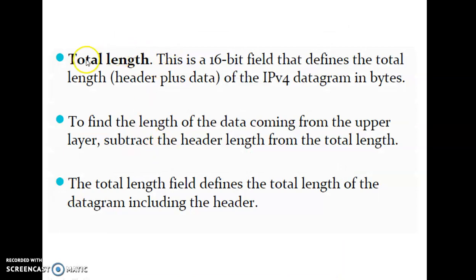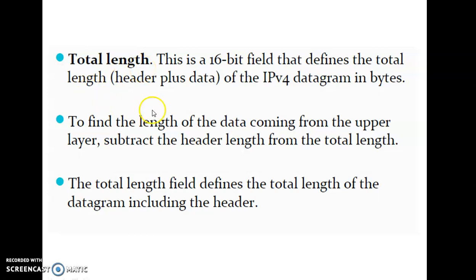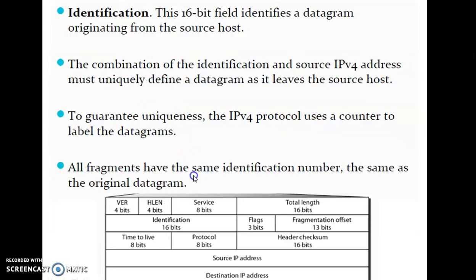The next field is Total Length, which is a 16-bit field. To find the length of data coming from the upper layer, subtract the header length from the total length. The total length of the packet is 2^16, which equals 65535 bytes. This concludes the first row of the packet format.